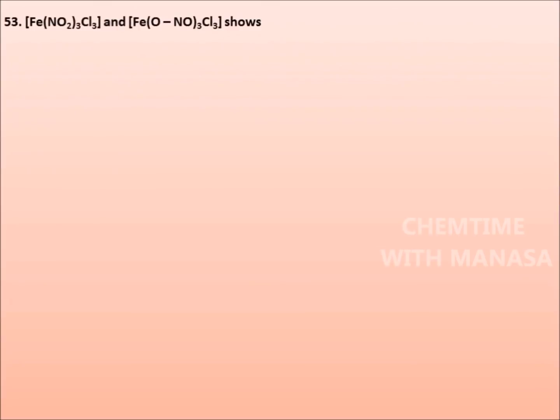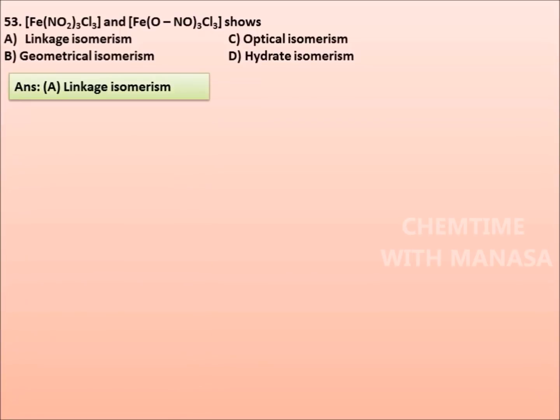Question number 53: [Fe(NO2)3Cl3] and [Fe(ONO)3Cl3] shows linkage isomerism, optical isomerism, geometrical isomerism, or hydrate isomerism. And the answer is they show linkage isomerism.